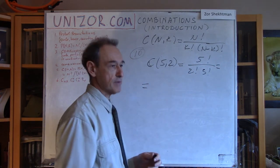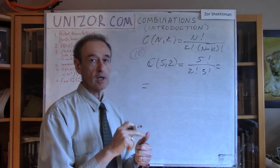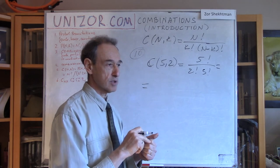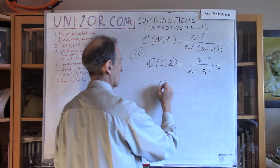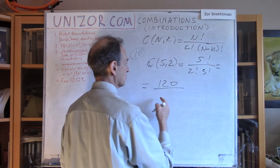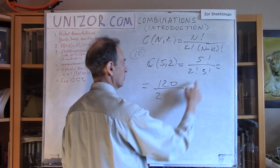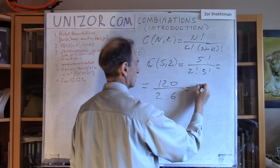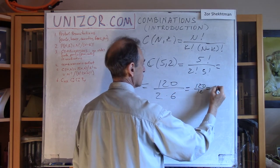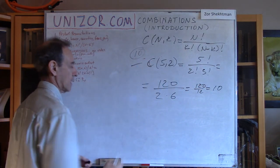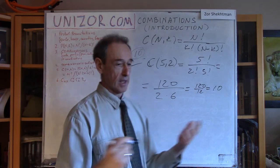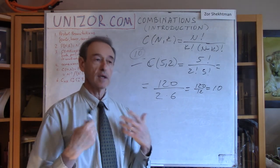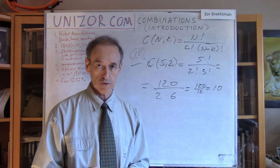What is 5 factorial? It's 1 times 2 times 3 times 4 times 5: two, six, twenty-four, one-twenty. Divided by 2 factorial — which is 2 — and 3 factorial — which is 6. So 120 divided by 12, which is ten — exactly what we found. Again, this is not a proof of the formula's correctness; it's just to make sure that whatever we do makes sense.